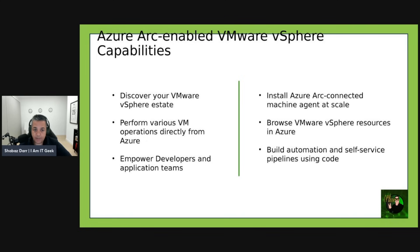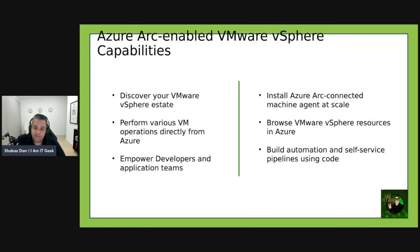I apologize for the title being a bit skewed — my presentations always seem to misalign their titles. Let's talk about Azure Arc enabled VMware vSphere capabilities first. This is something that simplifies the management of hybrid IT resources distributed across VMware vSphere and Azure.